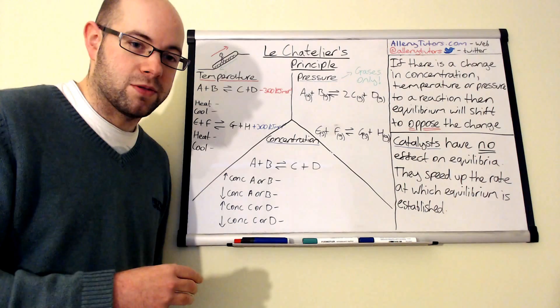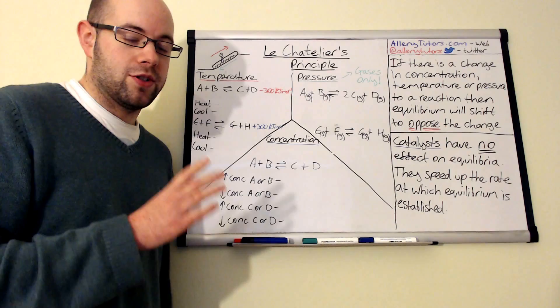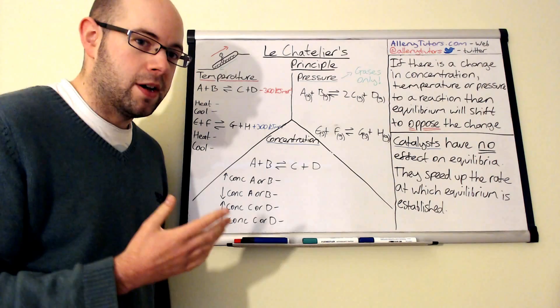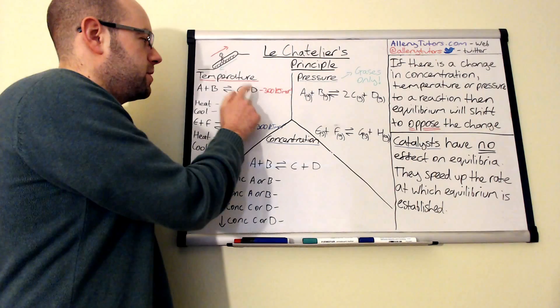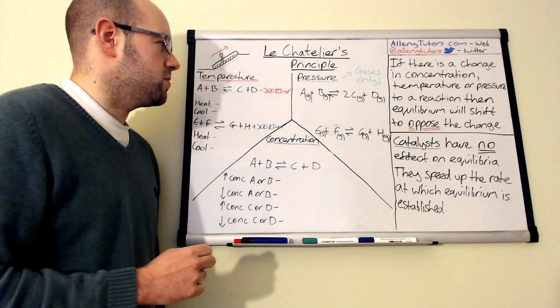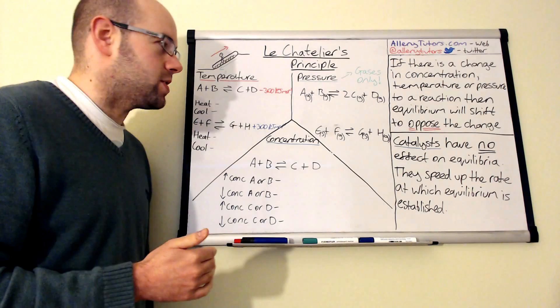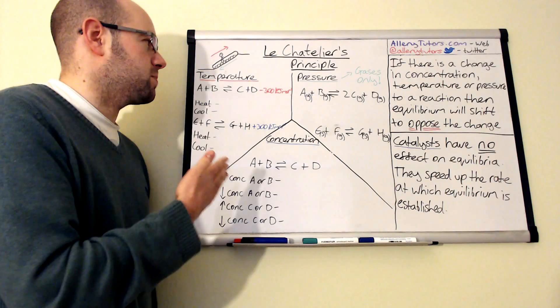We're going to start by looking at some conditions we can change: temperature, pressure, and concentration. Starting with temperature — imagine we've got a generic reaction: A + B gives C + D. In the exam you may have a very specific example. This reaction has an enthalpy value of minus 300 kilojoules per mole. That minus value tells us this reaction is exothermic. In the exam they will give you this enthalpy value next to the reaction.